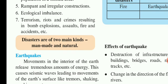Disasters are of two kinds: one is manmade disaster and one is natural disaster. Natural disasters include earthquake, flood, storms, and forest fire. Manmade disasters include external bleeding, fire, burning, and crimes such as terrorism — all of these are manmade disasters.